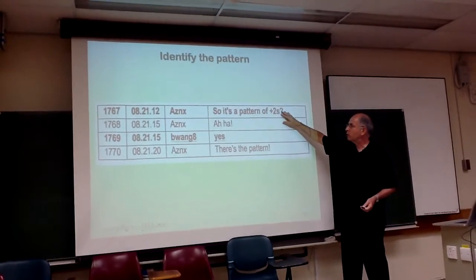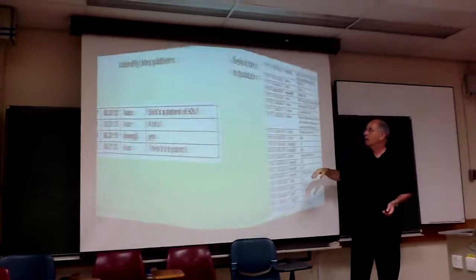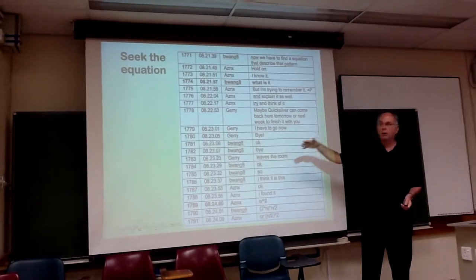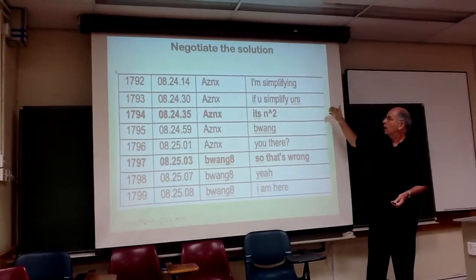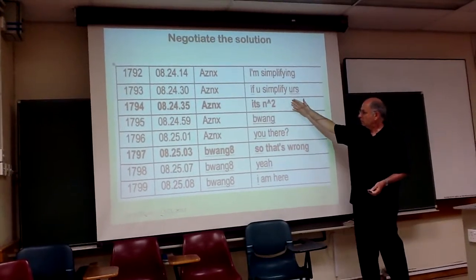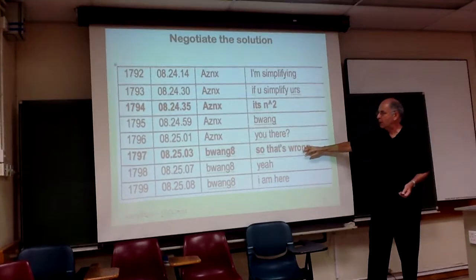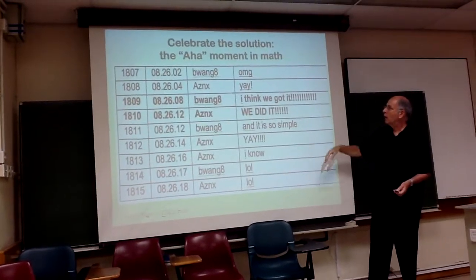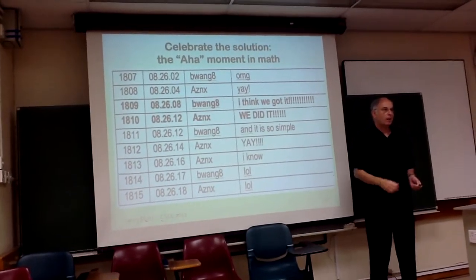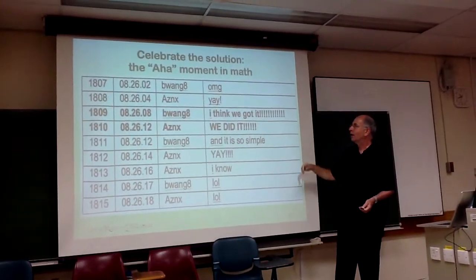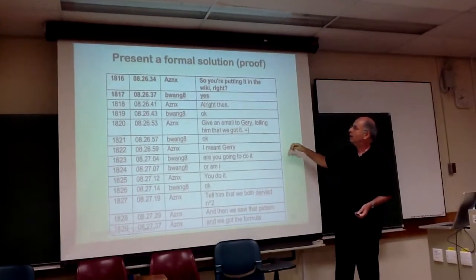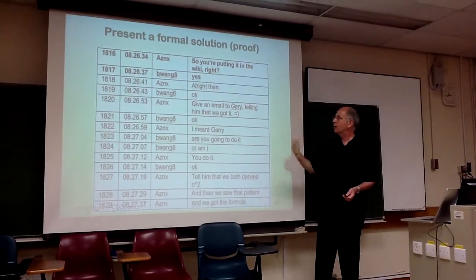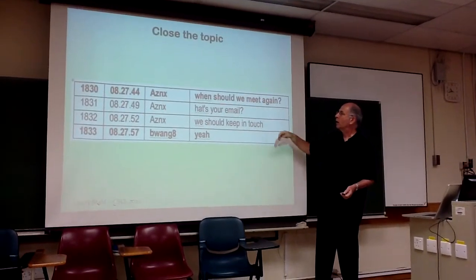One person proposes or questions 'is this the pattern?' and the other agrees. Here they're seeking the equation — one says 'let's find the equation' and the other agrees. They negotiate: 'is it this? Yes, but that means something else was wrong.' Then they check some cases, and then they're very excited because they found the answer and recognize it. That's their aha moment in math, which is very engaging. They say they're going to present this as a formal solution on the wiki shared with other groups in the event.